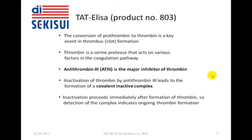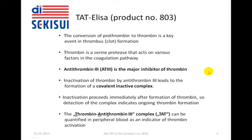Inactivation of thrombin when being generated proceeds immediately after formation, so that the detection of the complex indicates ongoing thrombin formation. In other words, the thrombin-antithrombin-3 complex, TAT complex, can be quantified in peripheral blood as an indicator of thrombin activation.